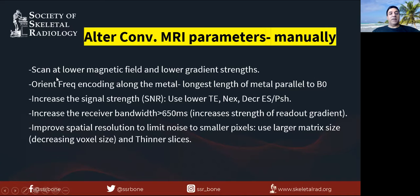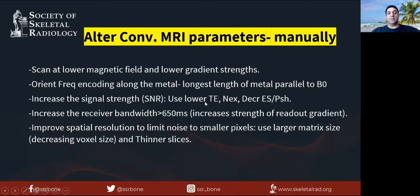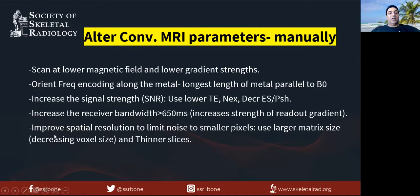These techniques can be applied on any magnet: use lower magnetic field strength and lower gradient strength. Orient the frequency encoding along the metal — you want the artifacts along the metal so you can see across the metal without artifacts. Keep the longest length of the metal parallel to B0. Increase signal by using a lower echo time, more acquisitions (NEX), and decrease echo spacing by using more 180 degree refocusing pulses. Also increase the receiver bandwidth — that's the ear of the magnet, listening to more of the signal — and increase readout gradient strength. Improve spatial resolution by using a large matrix size or thinner slices to limit noise to smaller pixels.